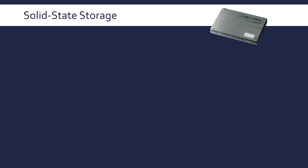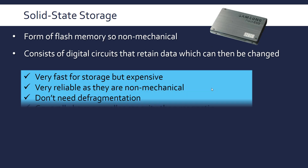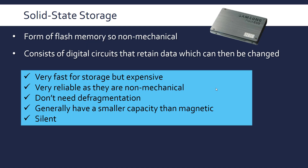The third type of storage is solid state storage — a solid state drive, or SSD. This is a type of flash memory and is non-mechanical: it has no spinning disk. It consists of digital circuits and logic gates. We can't go into exactly how they work as it's too complicated — it's essentially just many small circuits — but they can be evaluated quite nicely.